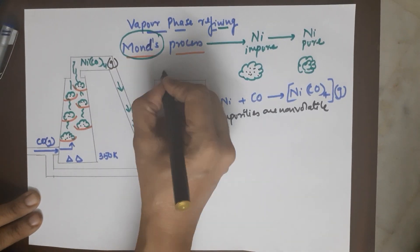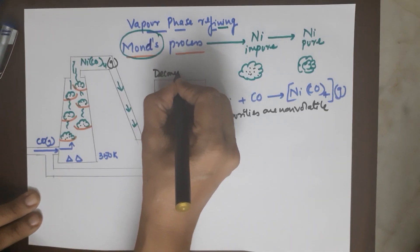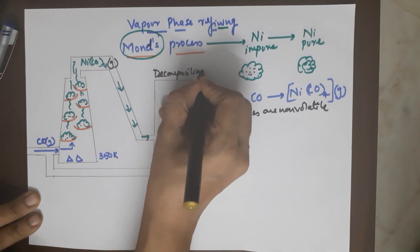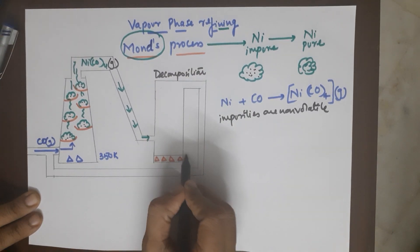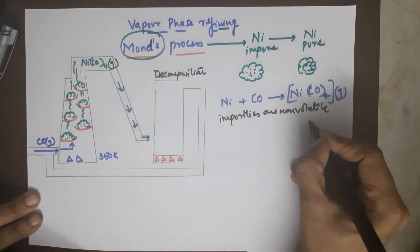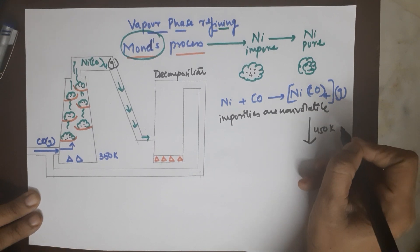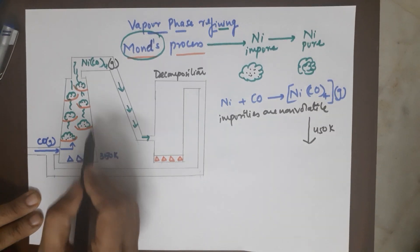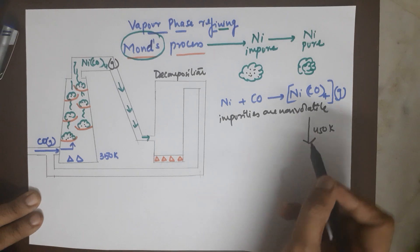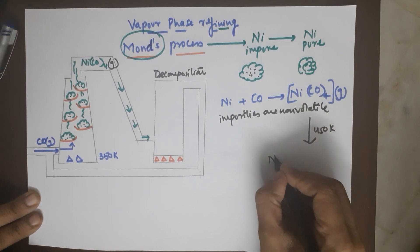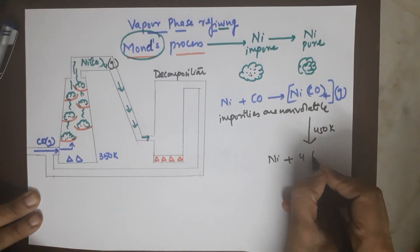It moves on to the next chamber. This chamber is called the decomposition chamber. In this you are doing an excess heating much beyond the stability of the compound. The heating is around 450 K, which means about 100 Kelvin more than what you were using in the first chamber.